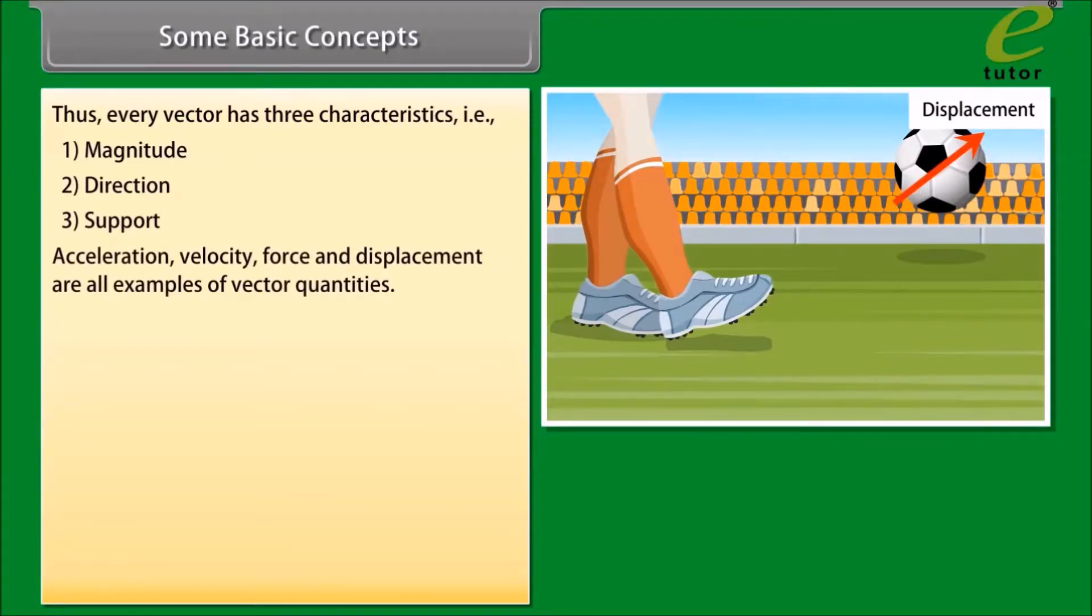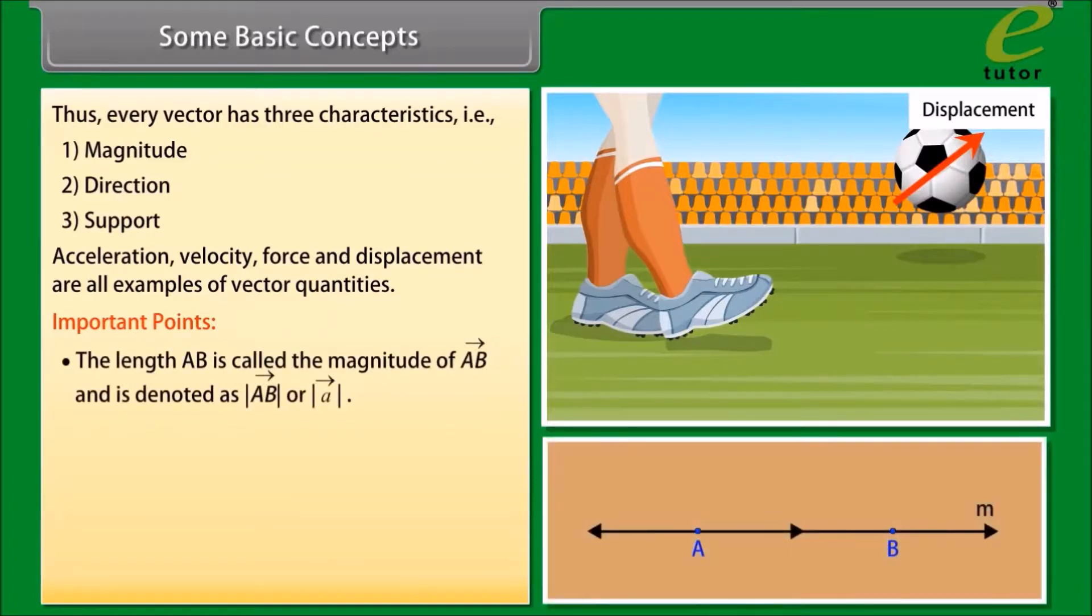Acceleration, velocity, force, and displacement are all examples of vector quantities. Important points: the length AB is called the magnitude of vector AB and is denoted as mod of vector AB or mod of vector A. The direction of vector AB is from A to B.